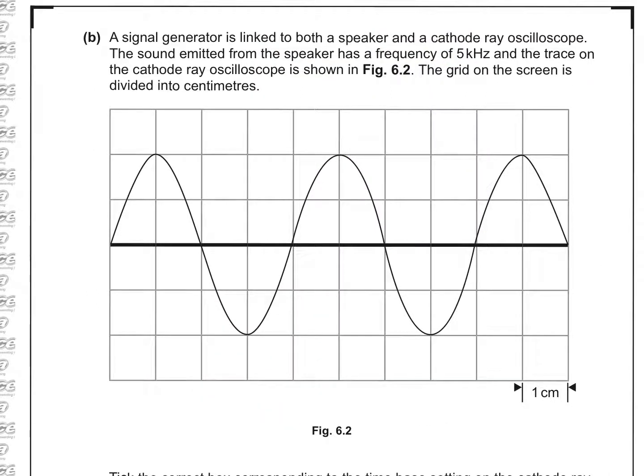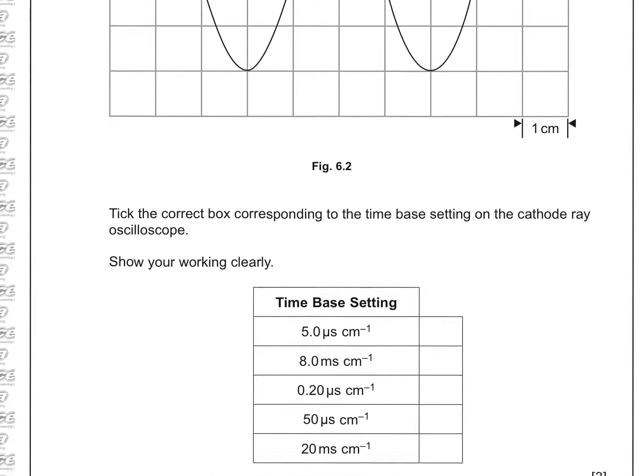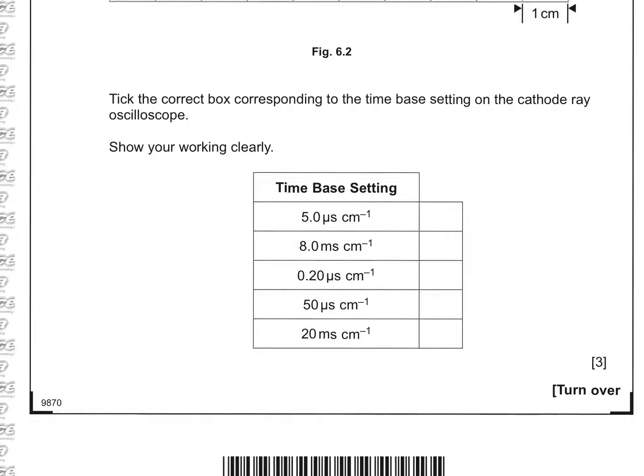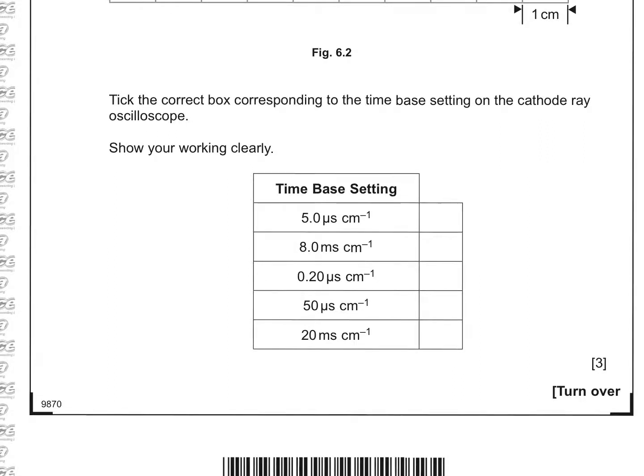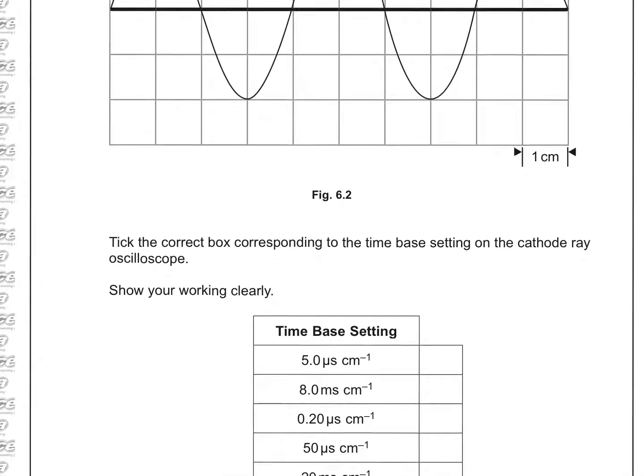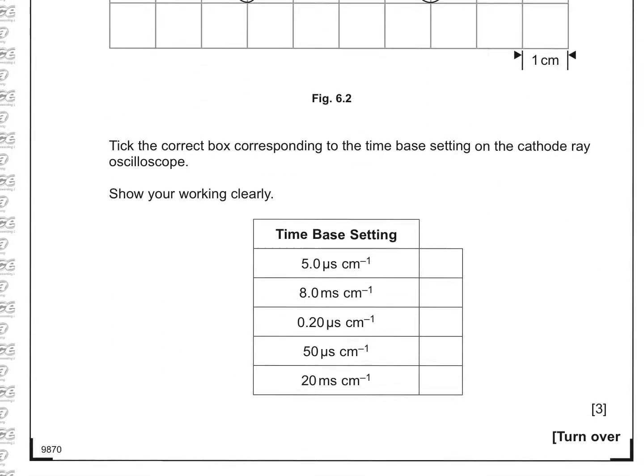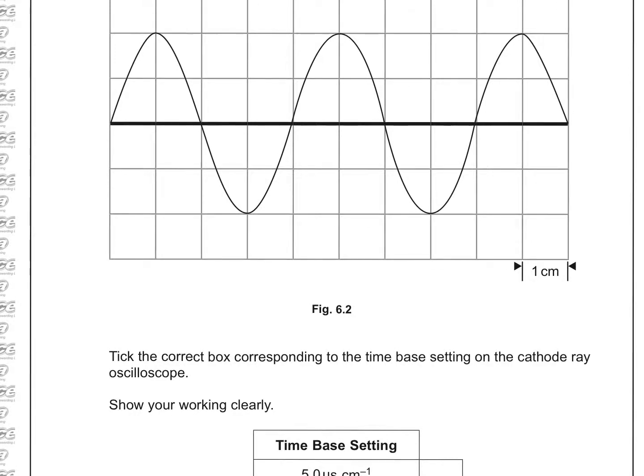Part B. A signal generator is linked to both a speaker and a cathode ray oscilloscope. The sound emitted from the speaker has a frequency of 5 kHz. And the trace on the cathode ray oscilloscope is shown in figure 6.2. The grid on the screen is divided into centimetres. Tick the correct box corresponding to the time-based setting on the cathode ray oscilloscope and show your working clearly. So these times will relate to the period. And the period here you can see is 4 squares on this oscilloscope.